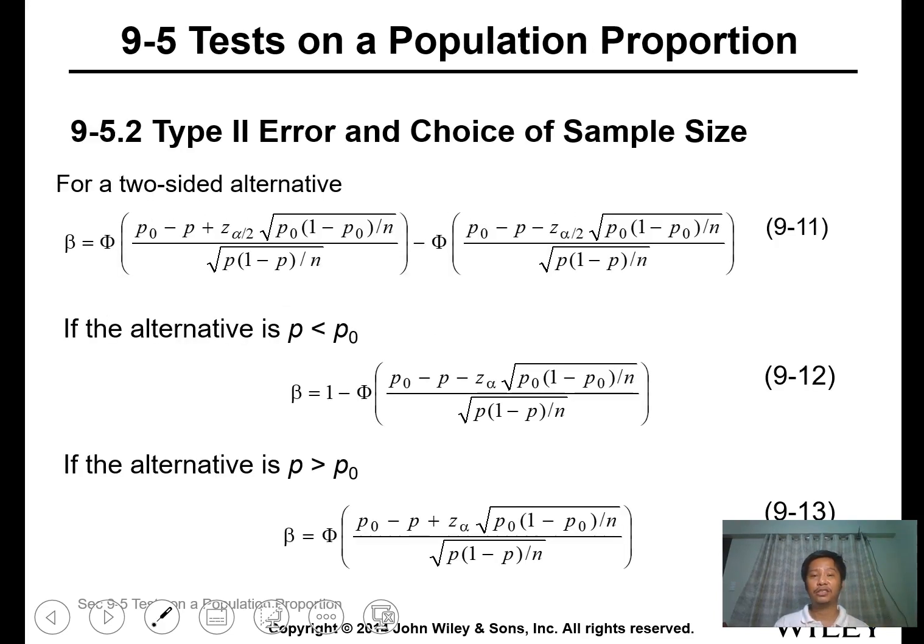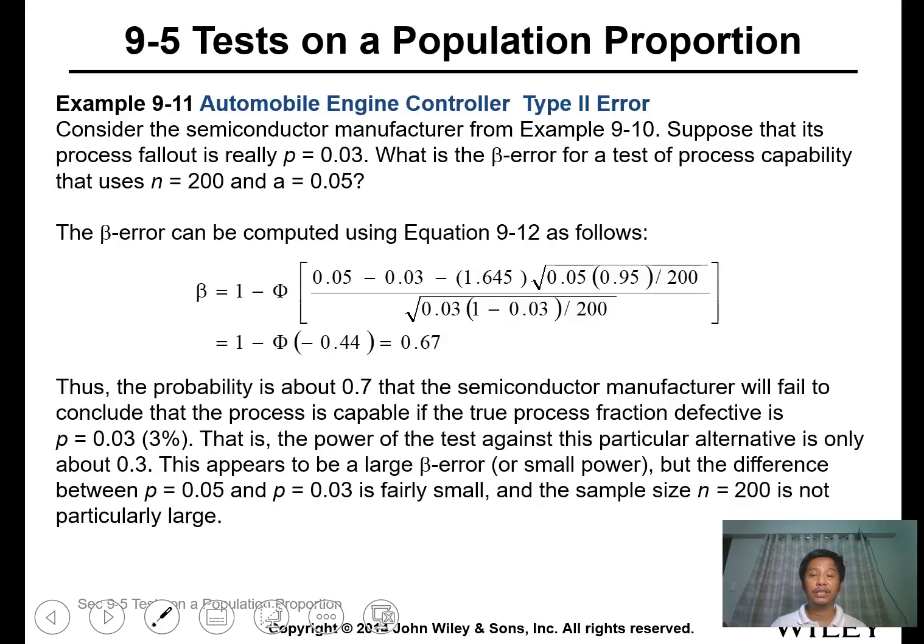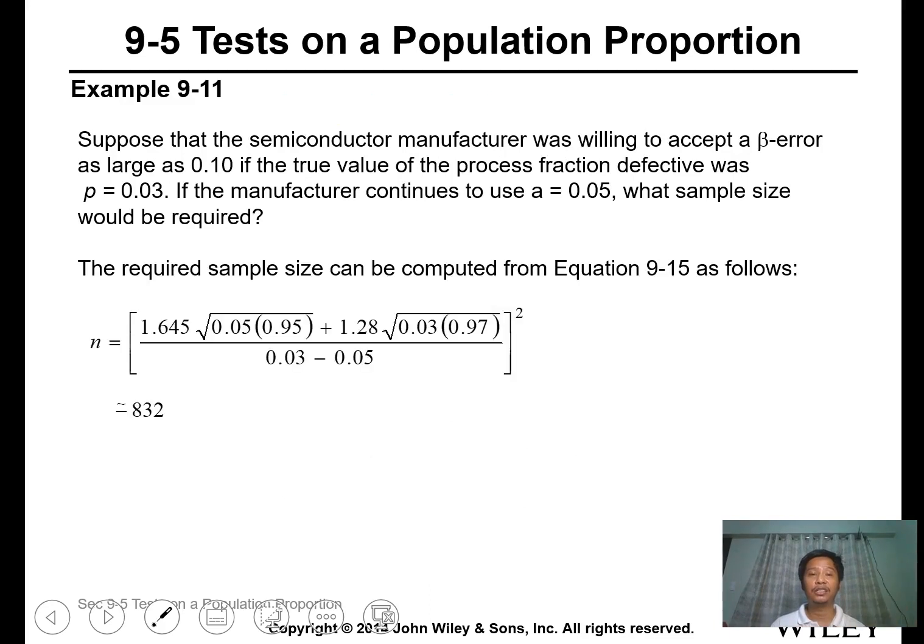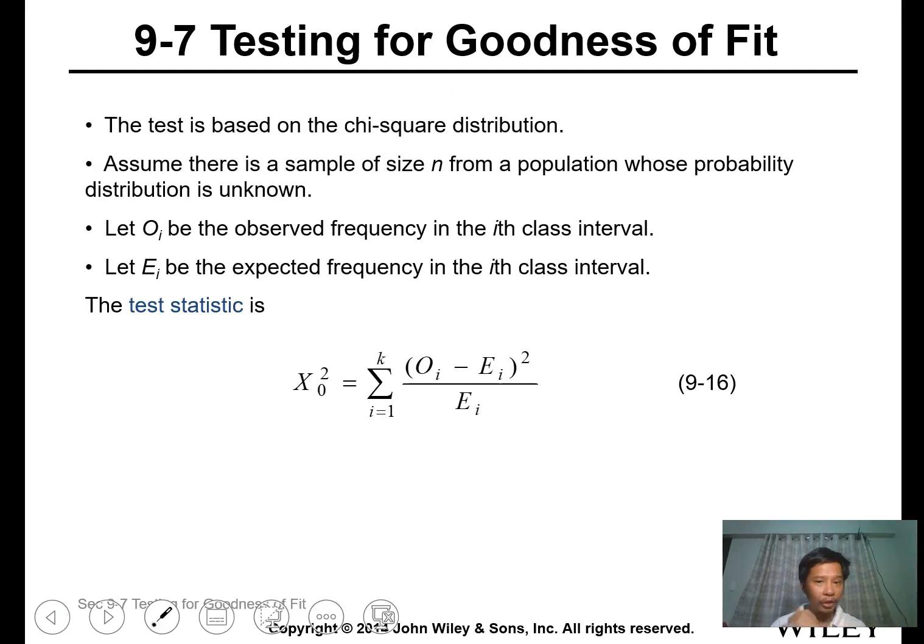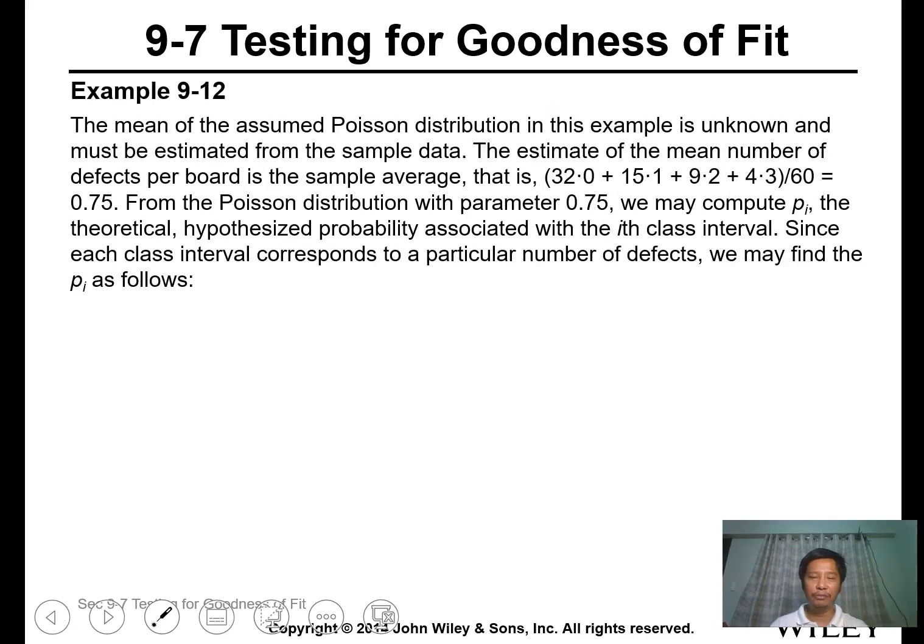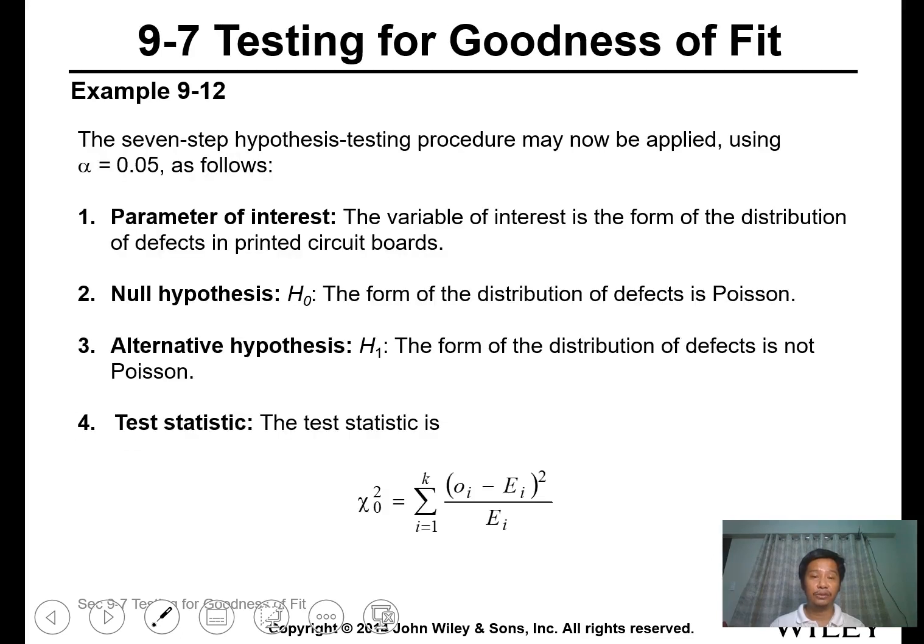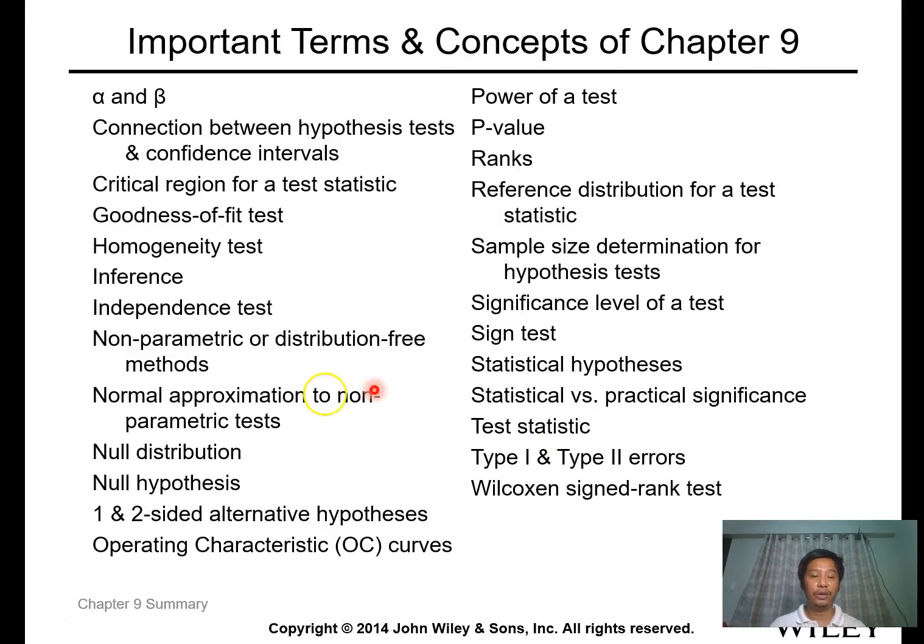For beta calculation and sample size determination for proportions, these formulas are for two-sided and one-sided tests. If you want to increase the beta, it's the same approach. Goodness of fit uses chi-square value as well. I'll leave this to you as it won't appear in the exam. So we end here and we'll proceed with the next lesson. Thank you.